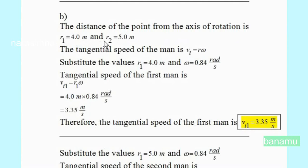R2 is equal to 5 meters. The tangential speed is Vt equal to R times omega. Substituting the values: R1 is equal to 4 meters and omega is equal to 0.84 radians per second. So the tangential speed of the first person is Vt equal to 4 meters times 0.84 radians per second.